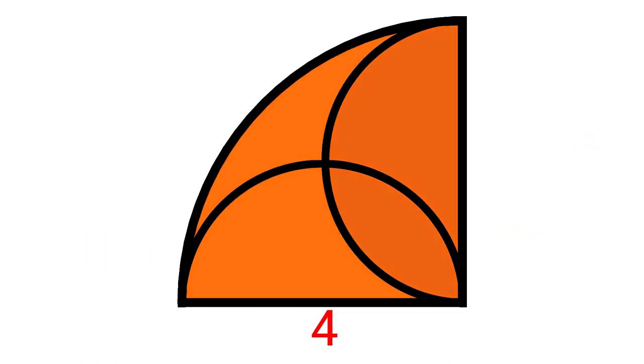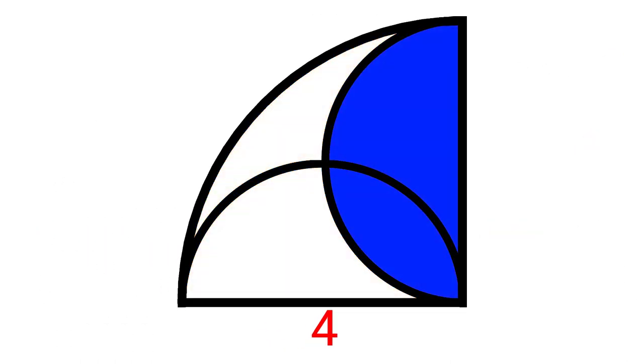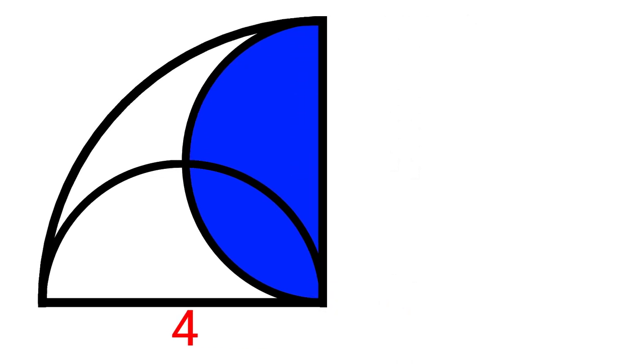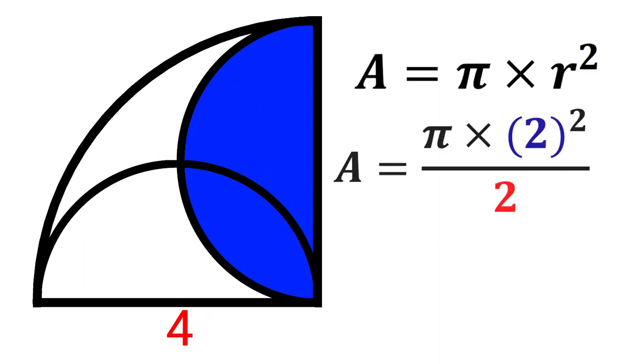Next, I'll find the area of one of the semicircles. As you can see, its diameter is 4, so its radius must be half of that. Using this formula again, I'll find the area, then divide it by 2. We get 2 pi.